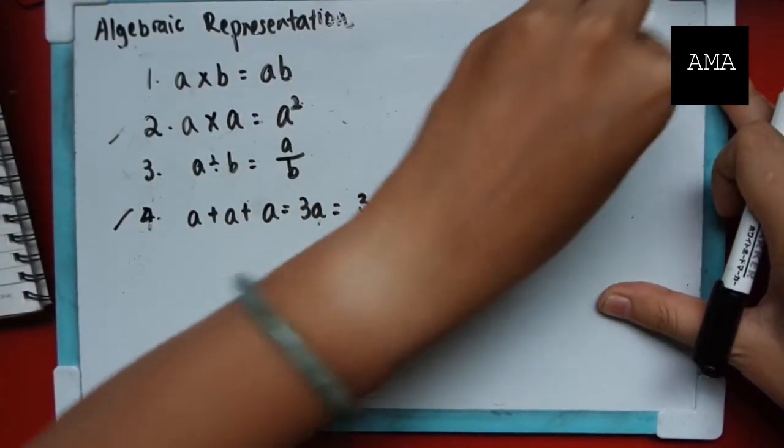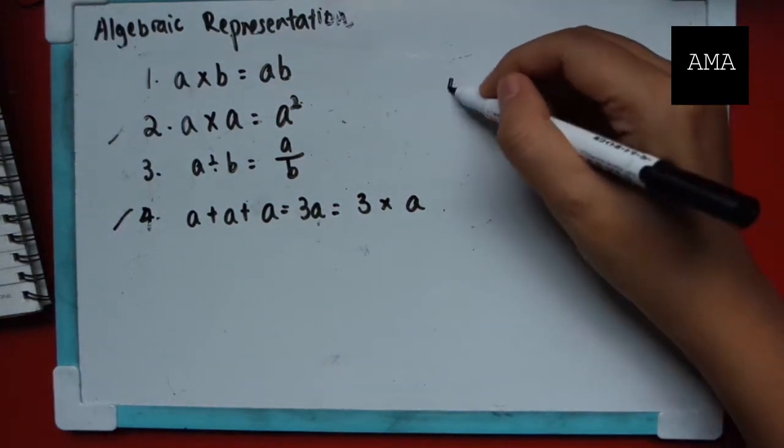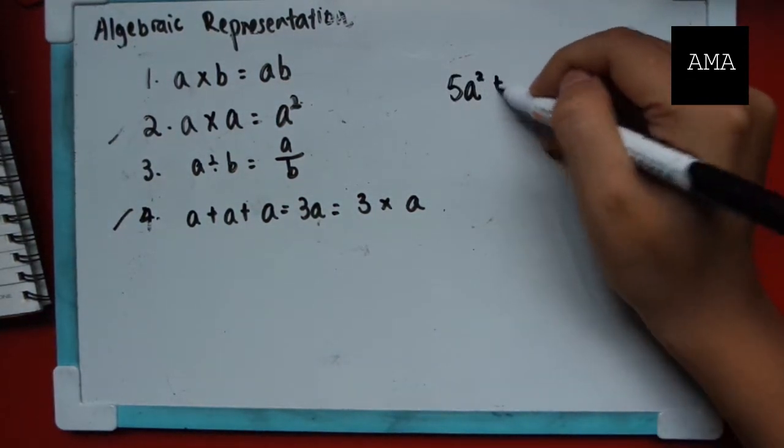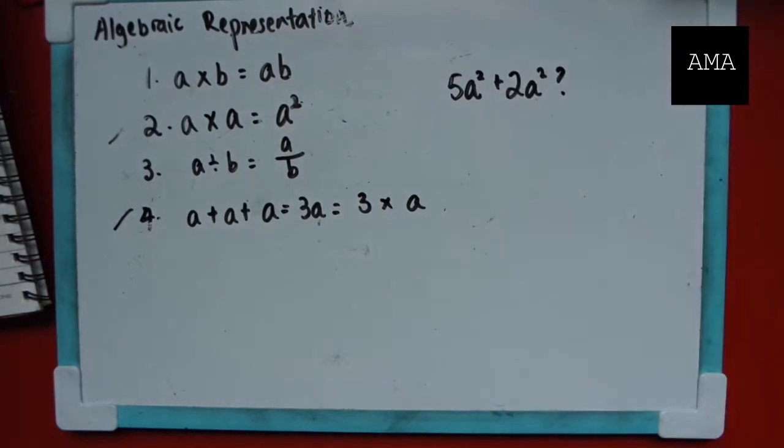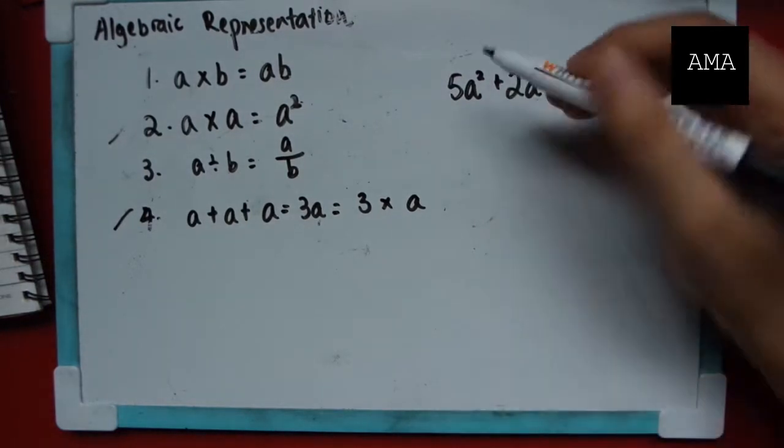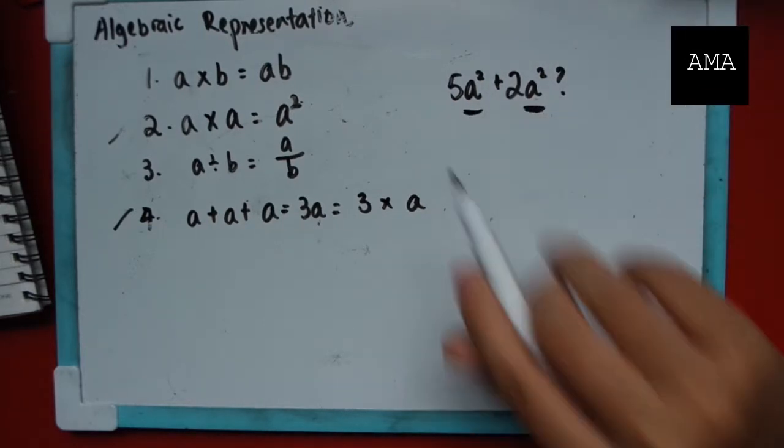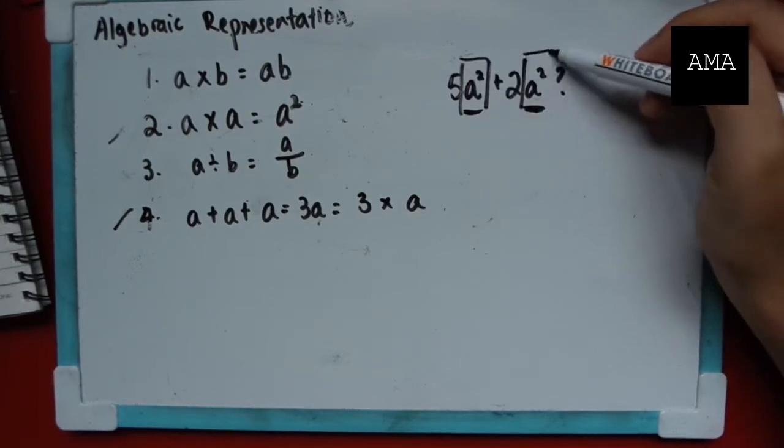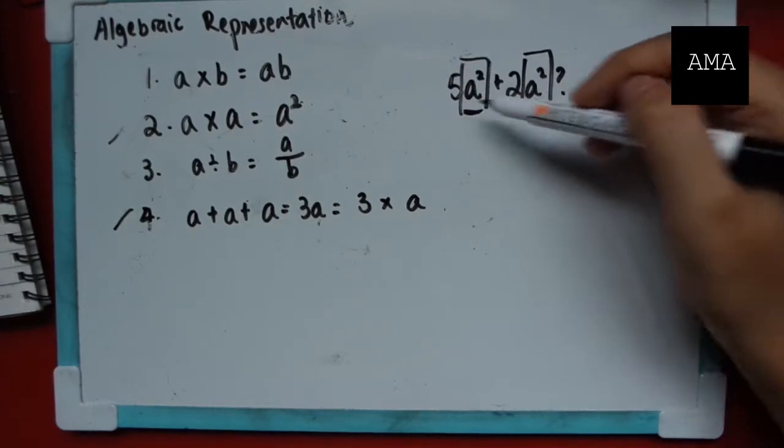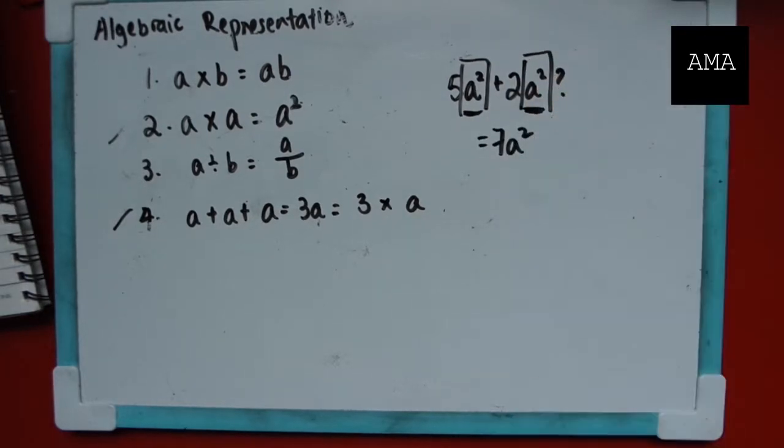The other thing that I want to talk about is what if you see something that looks like this: 5a square plus 2a square. So don't be stunned by the a square here. The thing is, you have to see it as though they are the same thing. It's like apples and apples. As long as they're identical, you can just add them up. It is 7a square.